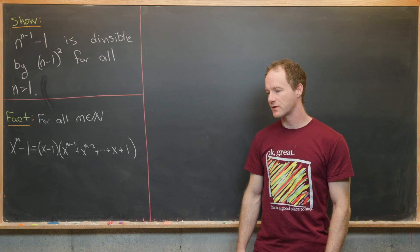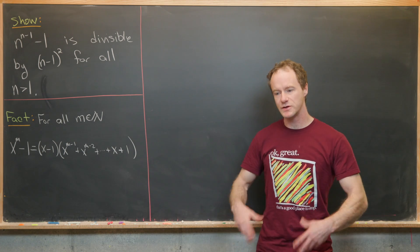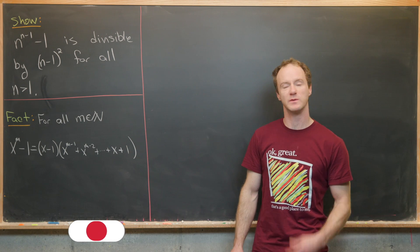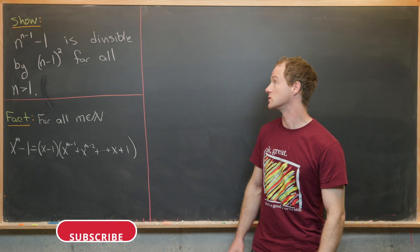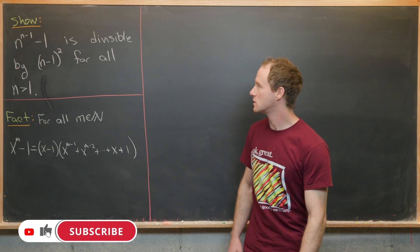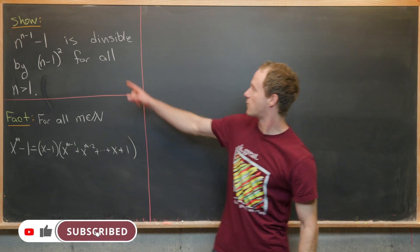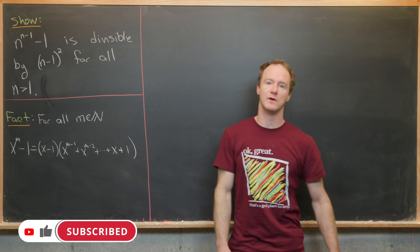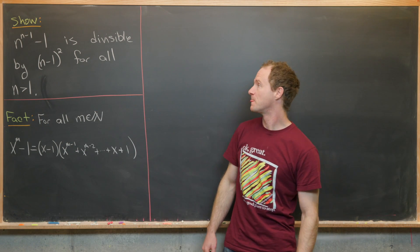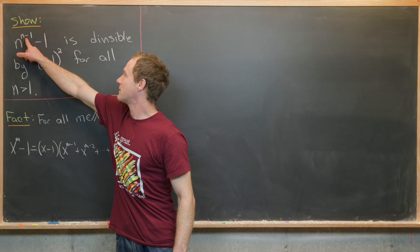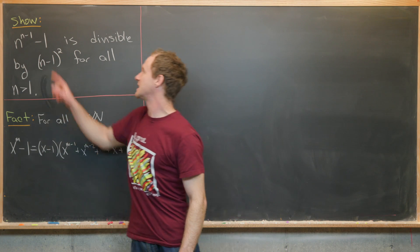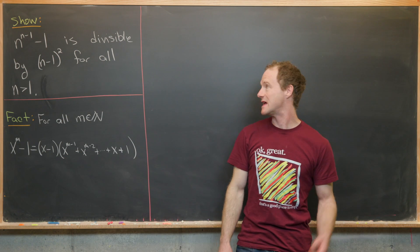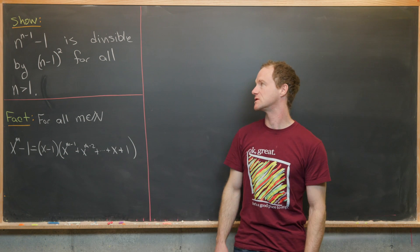Here we're going to look at a nice number theory problem that uses factorization of polynomials in its solution. Our goal is to show that for all integers n greater than 1, n to the n minus 1 minus 1 is divisible by n minus 1 squared.